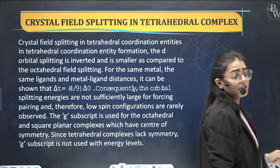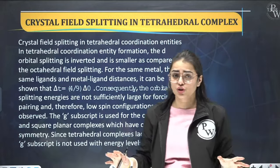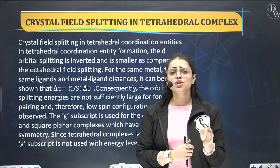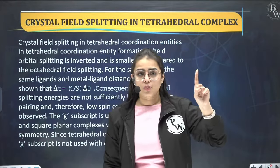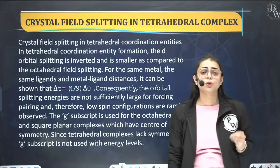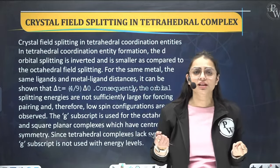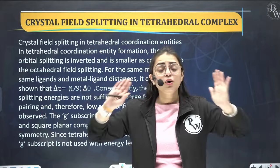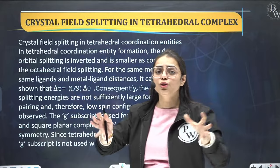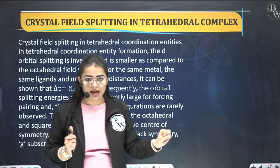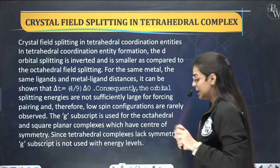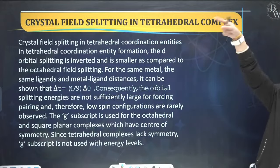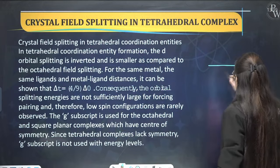Now we come to crystal field splitting in the tetrahedral complex. When the coordination number is 4, we can see two kinds of geometry: tetrahedral and square planar. Coordination number refers to the number of donor atoms attached to the central metal atom, donating a lone pair of electrons. So with coordination number 4, there are 4 ligands, and with coordination number 6, there are 6 ligands.